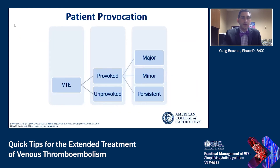With patient provocation, you want to look at whether the VTE is provoked or unprovoked. If so, were there major, minor, or persistent risk factors that would put the patient at higher risk? If it is provoked with major or persistent risk factors, you may want to consider extended therapy. If it is unprovoked, the patient would probably warrant indefinite anticoagulation.